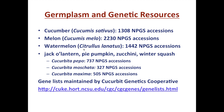Watermelon, Citrullus lanatus, also has many accessions and is known as a great source of lycopene in the diet with great bioavailability. Jack-o'-lanterns, pie pumpkins, zucchinis, winter squash, butternut, and acorn are all in the Cucurbita genus, with a split between three different species: C. pepo, where you find most jack-o'-lanterns, zucchini, and acorn squash; C. moschata, typically butternut squash; and Cucurbita maxima, which includes crops like hubbard and buttercup squash. All of these different genetic seed stocks are great resources for improvement in the Cucurbitaceae.